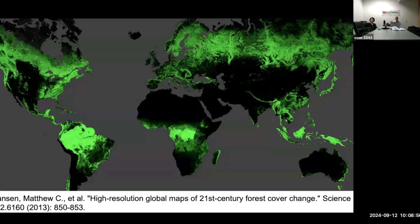One of my colleagues is Matthew Hansen at the University of Maryland. Matt Hansen and his group have been producing global 30-meter maps of forest cover change using Landsat data. This is very seminal work — it's global in scope. Martin Brandt and I decided we would attempt to work in the semi-arid area, because heretofore no one had been able to work there.